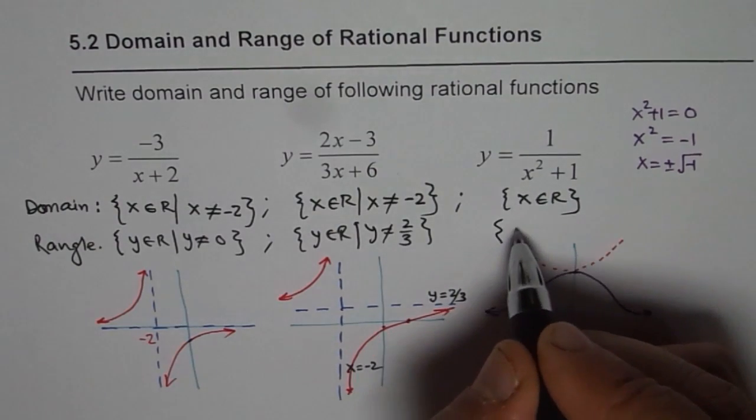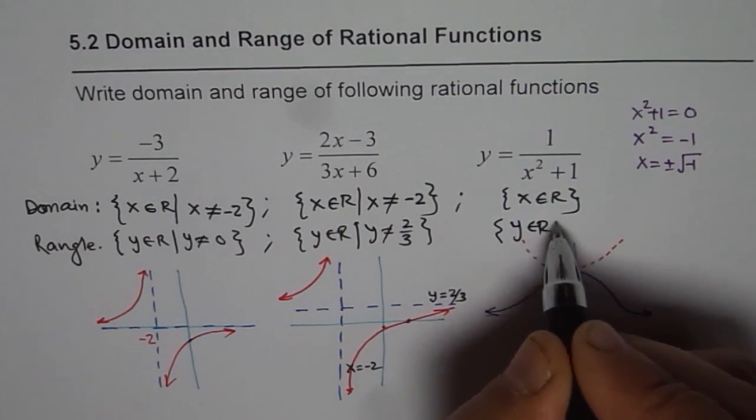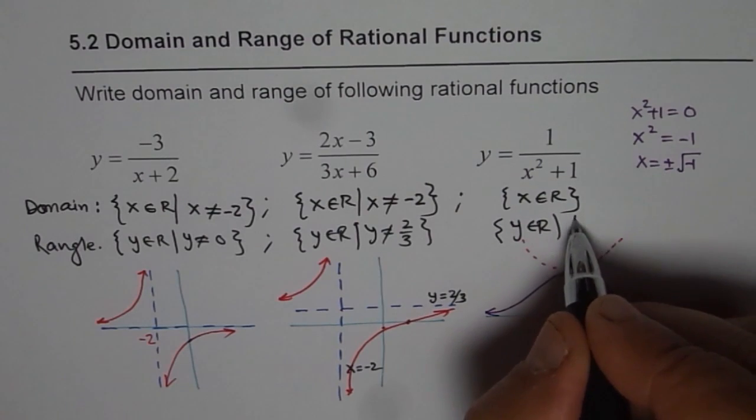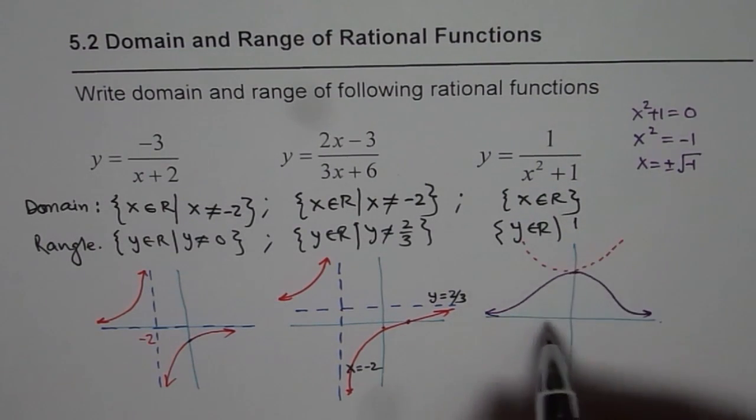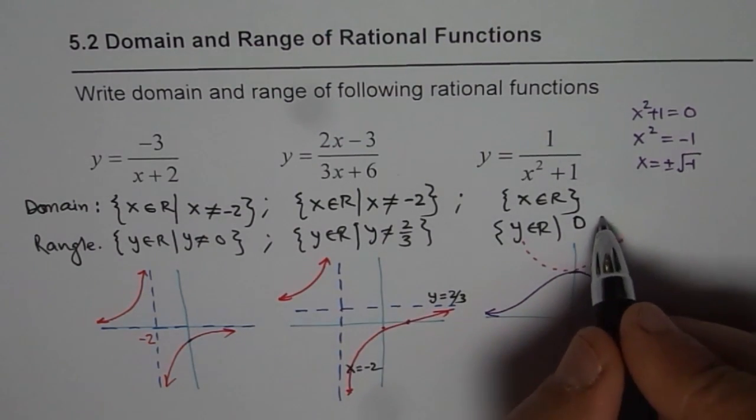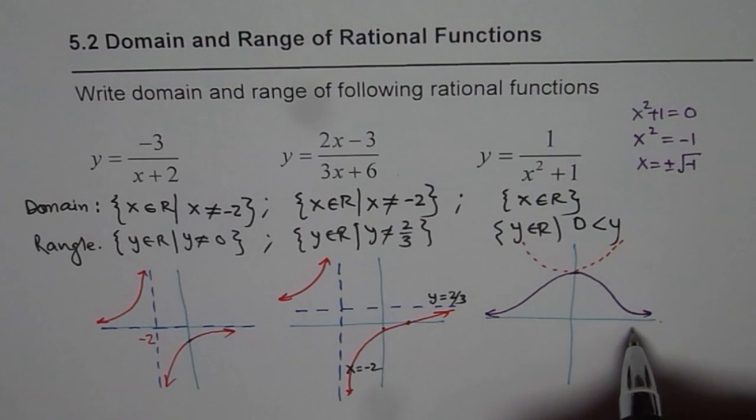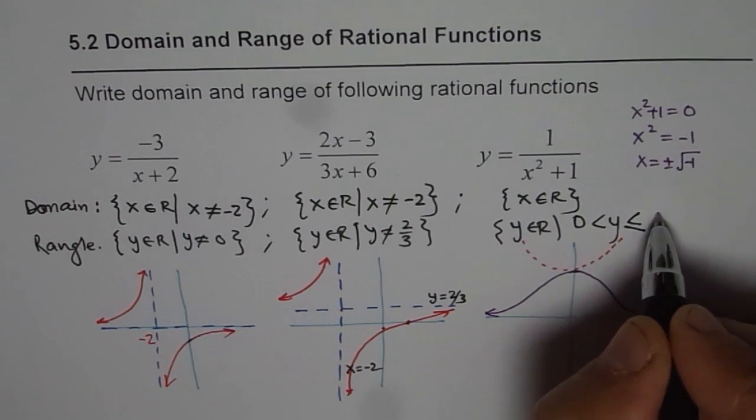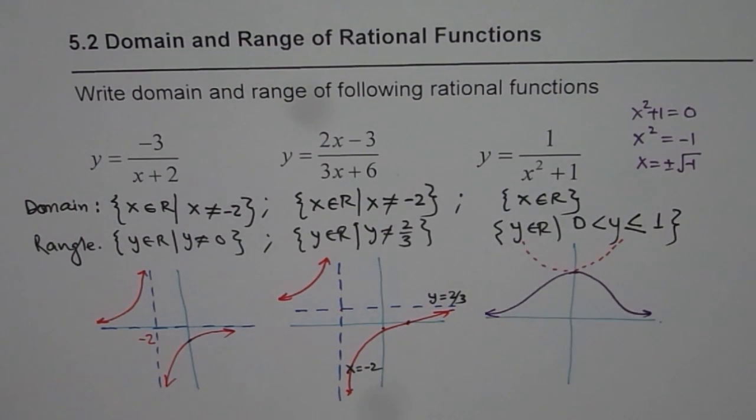But here, this is kind of very typical. So y belongs to real number. What is y here? Maximum value is 1. So y is, actually, I should start with 0. It is good to write inequalities in one direction. So y is greater than 0. It is not crossing x-axis at all. And it is less than equal to 1. So that is the tricky part.